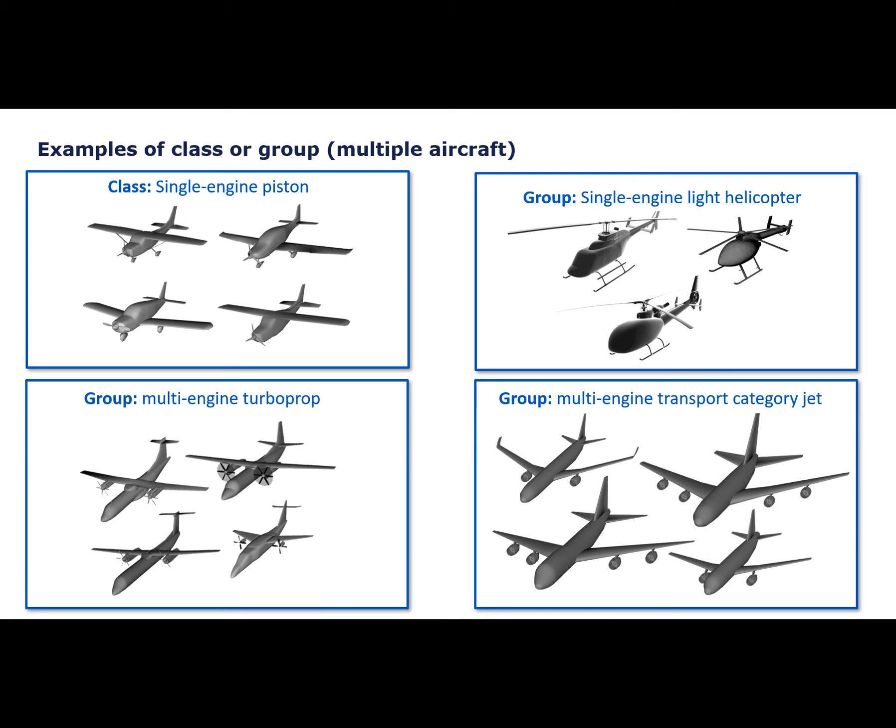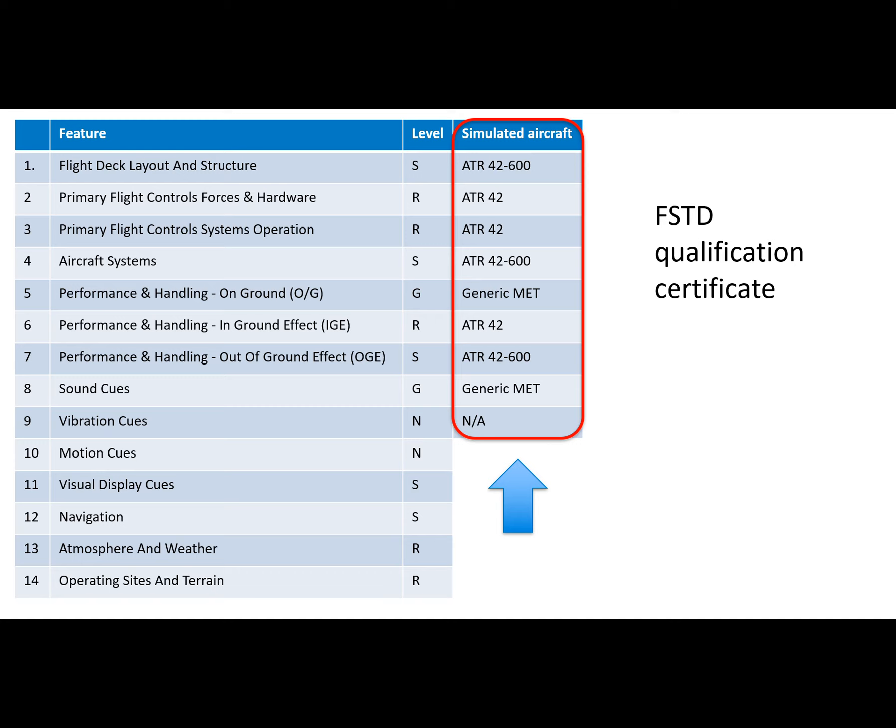The FSTD qualification certificate will show the FSTD Capability Signature table. In addition, it will show one more column for the simulated aircraft, because it may be different for different features. The training requirements will make it clear if and when the features may simulate different aircraft, or when all features should be simulating the same aircraft — for example, for type rating training, all features should be simulating the same aircraft type.